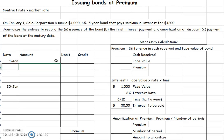Let's talk about issuing bonds at a premium. Before we issued them at a discount, now we're going to issue them at a premium. In this case, our contract rate is higher than the market rate — that's why we issue it at a premium. We can see this because we issued this $1,000 bond for $1,200, meaning we got more than the face value of our bond.